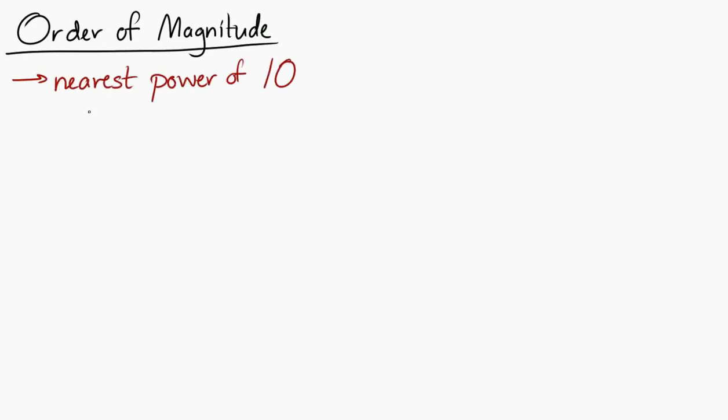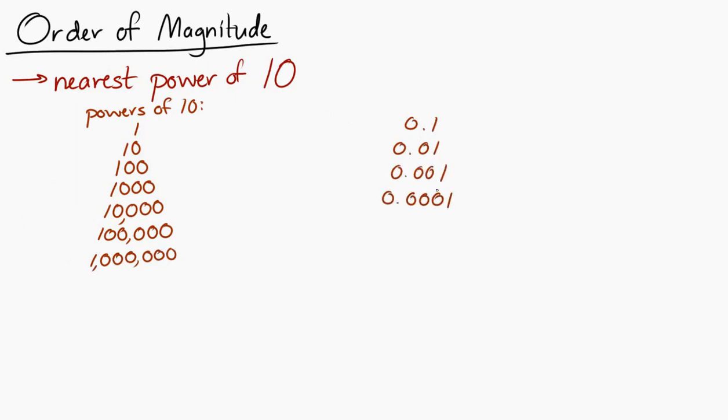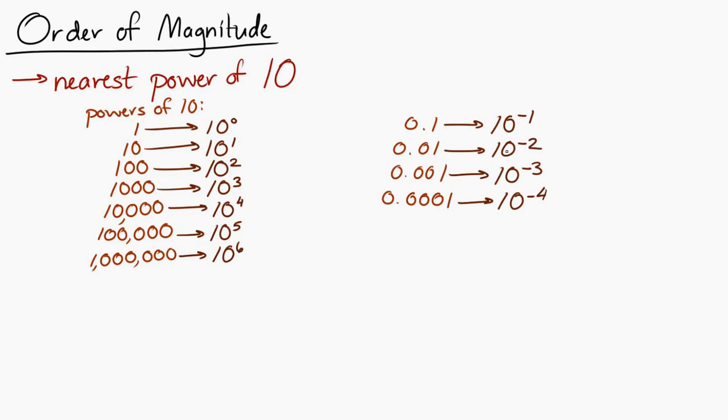So, powers of 10, those are things like 1, 10, 100, 1000, 10,000, 100,000, million. And then 0.1, 0.01, 0.001, 0.0001, and so on. Or, if we were to express it in scientific notation, 1 is 10 to the 0, 10 is 10 to the 1, 10 to the 2, 10 to the 3, 10 to the 4, and so on. And then over here, 10 to the minus 1, 10 to the minus 2, 10 to the minus 3, and so on.